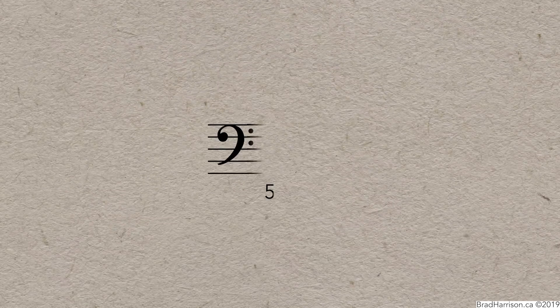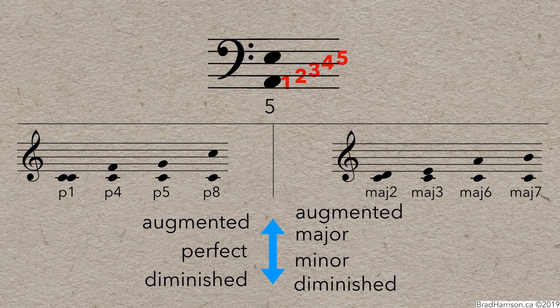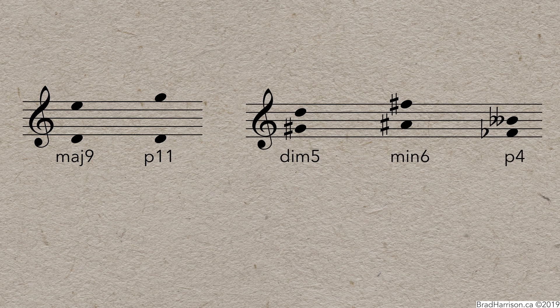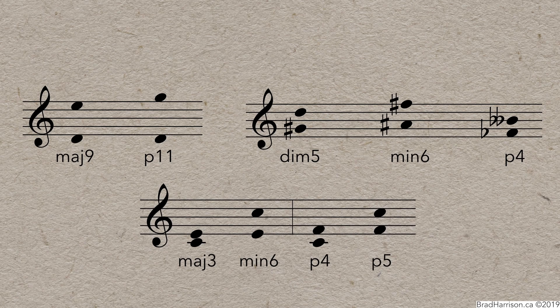In Part 1, we learned how to count the number of an interval and how to determine the quality of most intervals up to an octave. In Part 2, we'll cover intervals larger than an octave, how to identify intervals with odd roots that aren't based on major scales, and inversions, which will finally explain why some intervals are perfect and some are major.